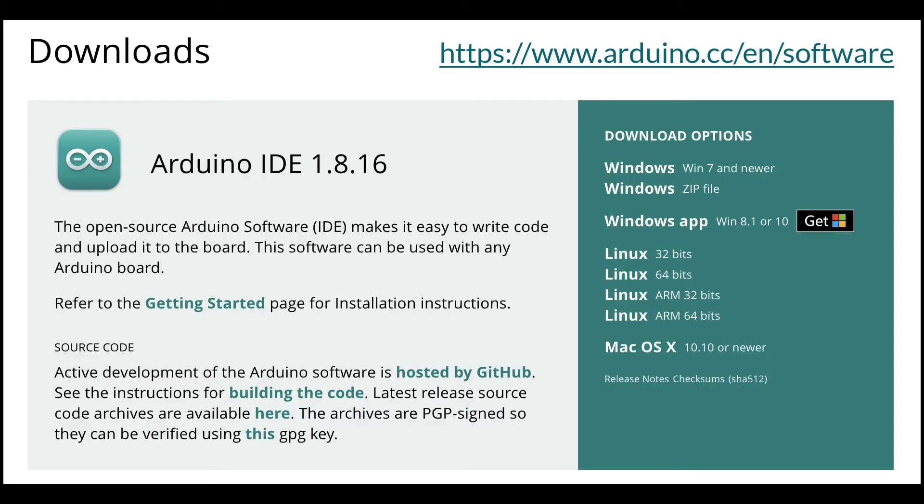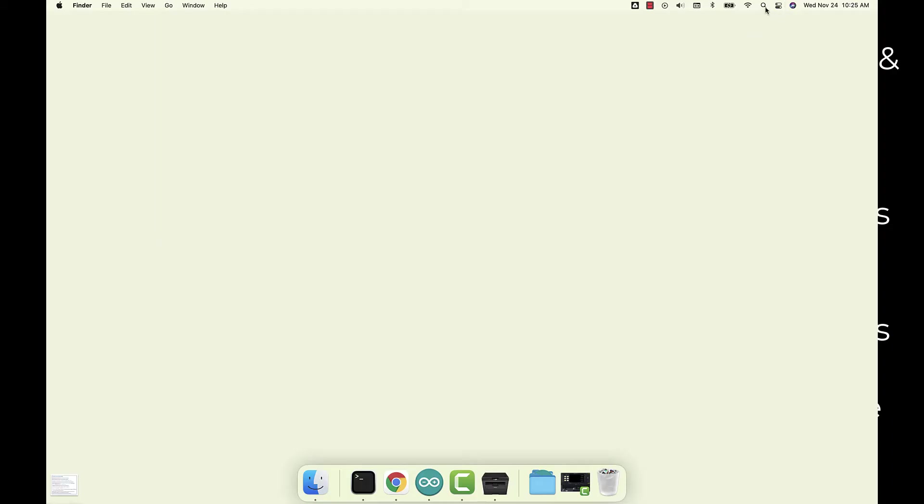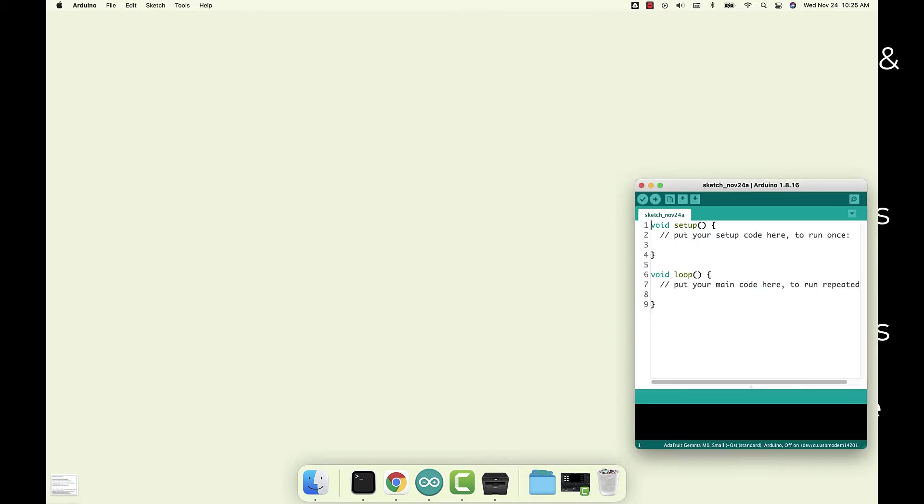To go to the software page at the Arduino.cc website, you'll see the download options for the different operating systems. Choose the correct one for your system and then install it just like you would any other application. Once you have it installed, you can open it just like any other application, however that works on your system.